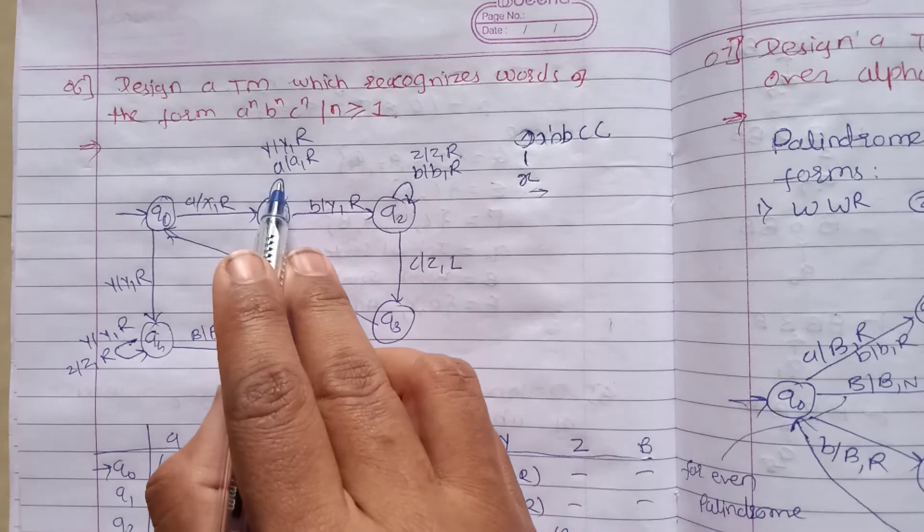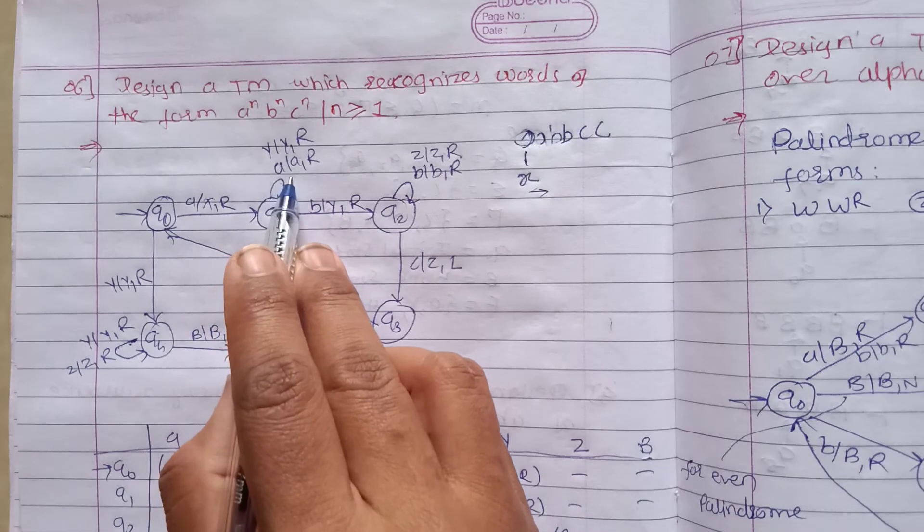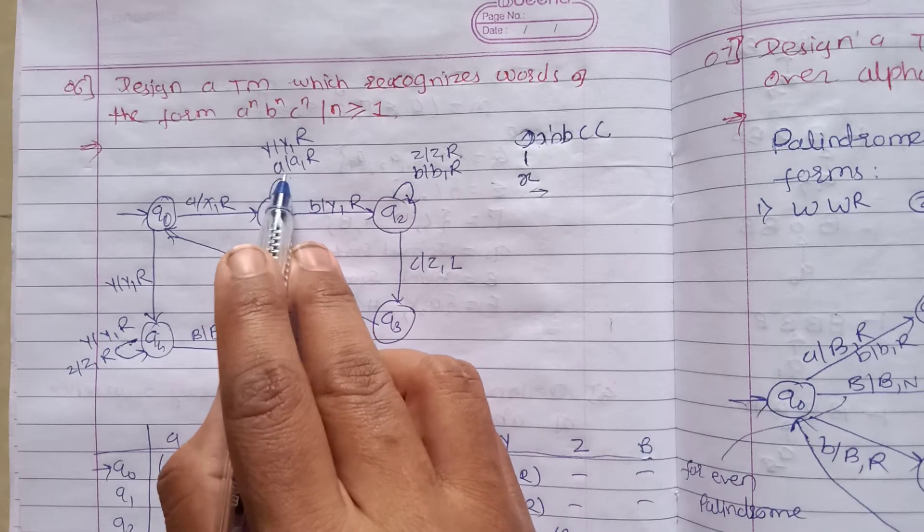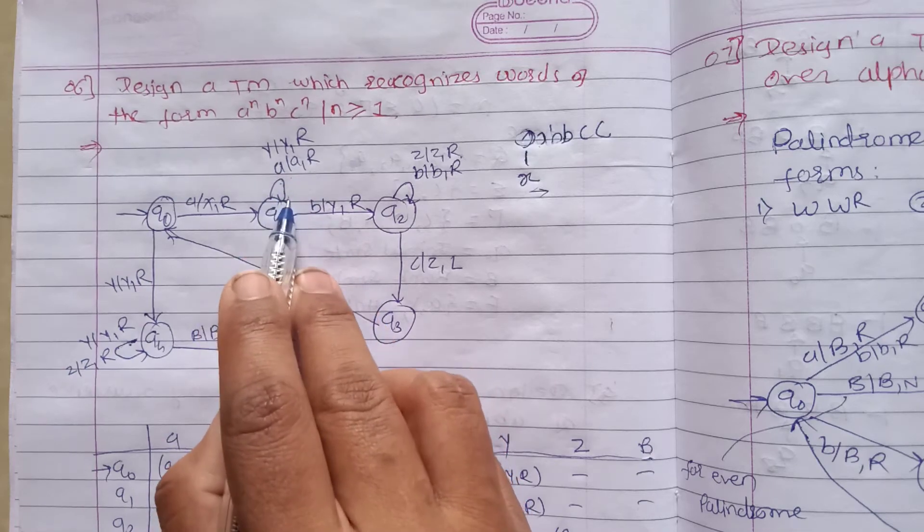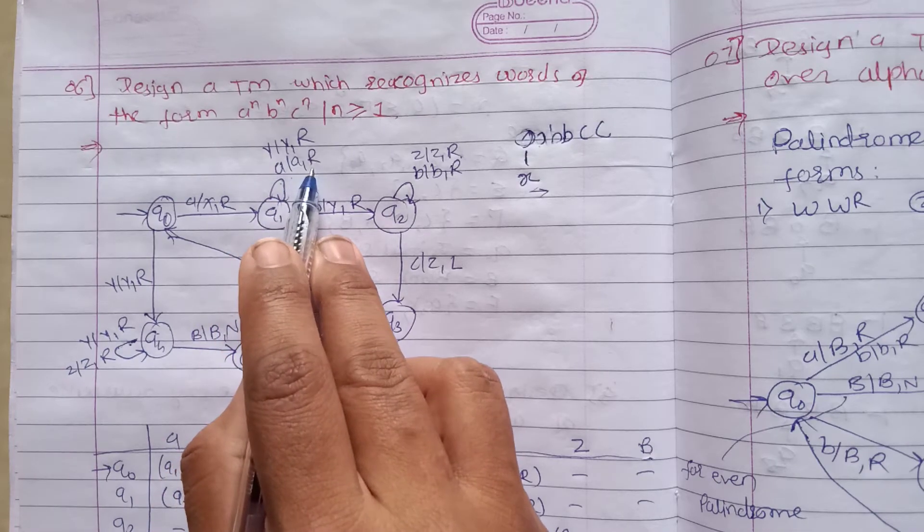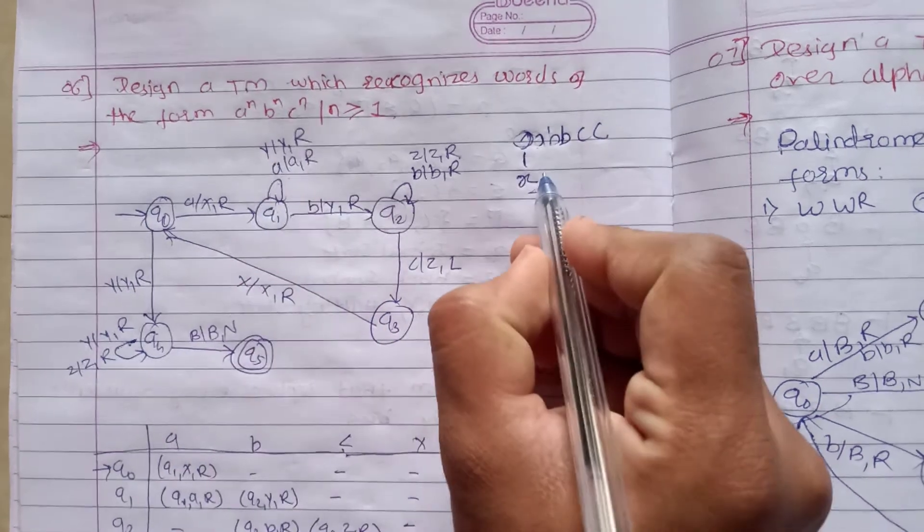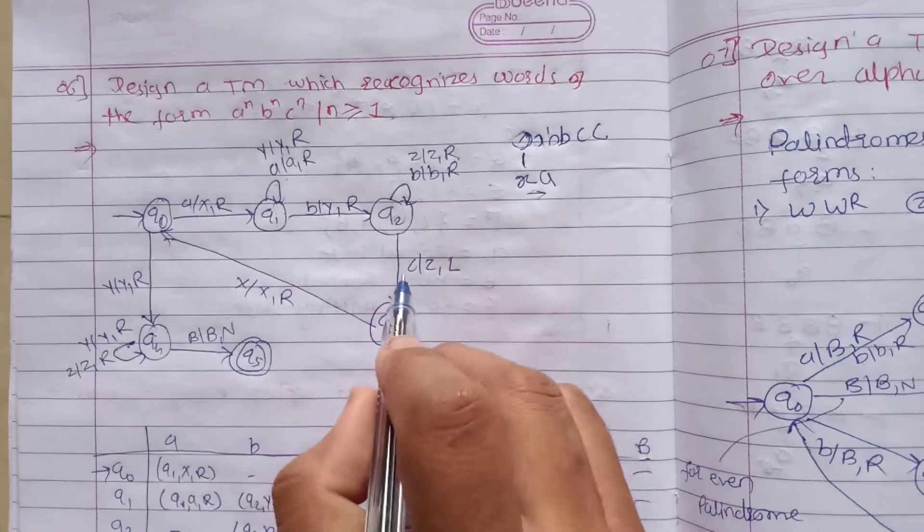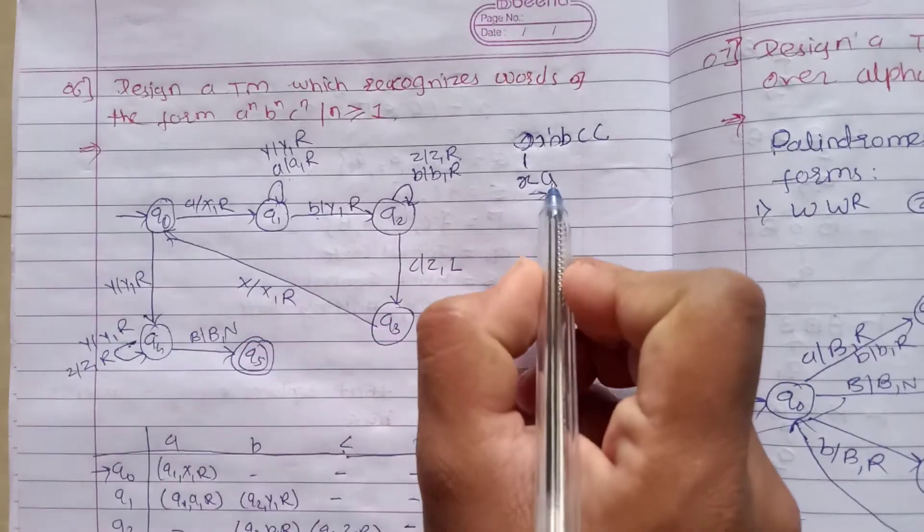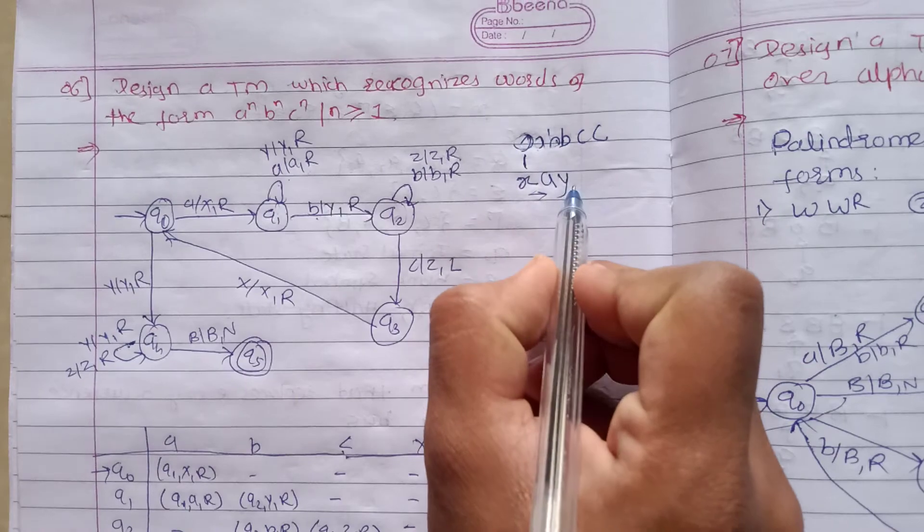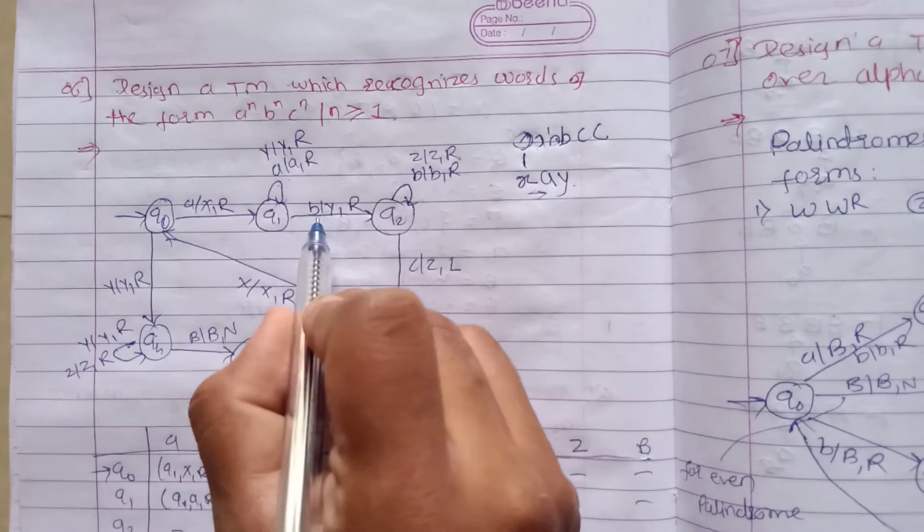When we read another a, we keep it as it is. That's why here we have a loop - however many a's there are, we keep them as it is. As soon as the first b is encountered, that will be converted into y. So b is converted into y, movement is right.